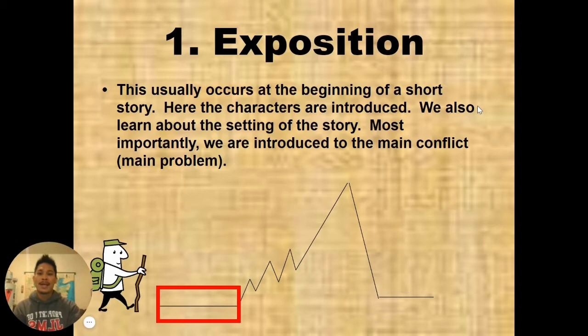First portion that happens in the beginning is called the exposition. This is the beginning. This is where characters are introduced. We learn about the setting, the time and place of the story. And we also see the main conflict, the main problem. The conflict is the main problem. So we see a lot happening in the beginning of the story called the exposition.